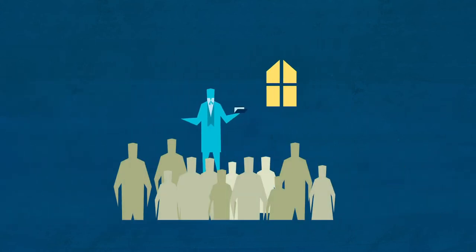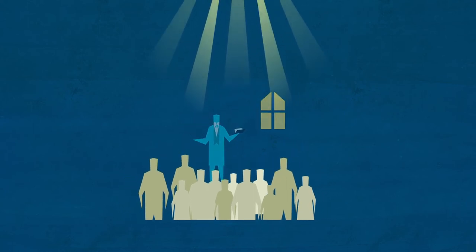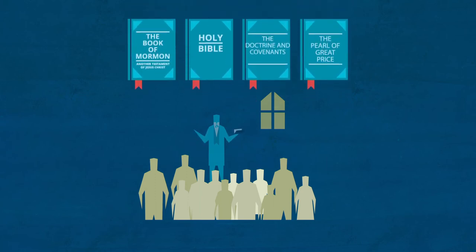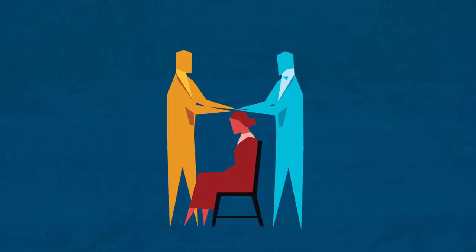As part of the Restoration, Joseph Smith received revelation from God, bringing back lost eternal truths. By the gift and power of God, he translated ancient scriptures and clarified the meaning of existing scripture. He also received the priesthood, God's authority to act in his name.